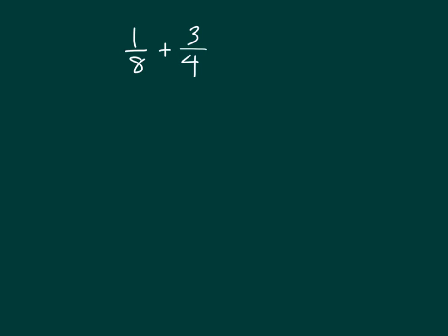Let's add one-eighth plus three-fourths. In this case, let's utilize a number line. What whole numbers would you place onto that number line? Did you say zero and one? Our next step is to look at these fractions. I have eighths, and I have fourths.